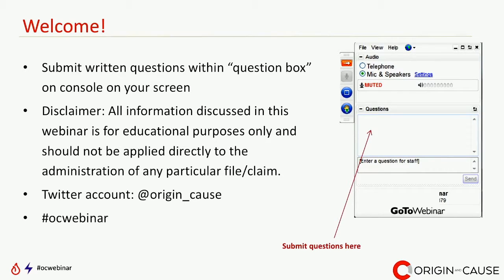When you close the GoToWebinar window, the program will prompt you to answer six quick questions about the webinar. We really like to hear feedback from attendees — how you rank the speakers and content, and what you want to learn about in future webinars. That has actually determined our future webinar topics. If you experience any technical difficulties, you can email our team at webinar@origin-and-cause.com and join the conversation on Twitter via hashtag OC webinar.